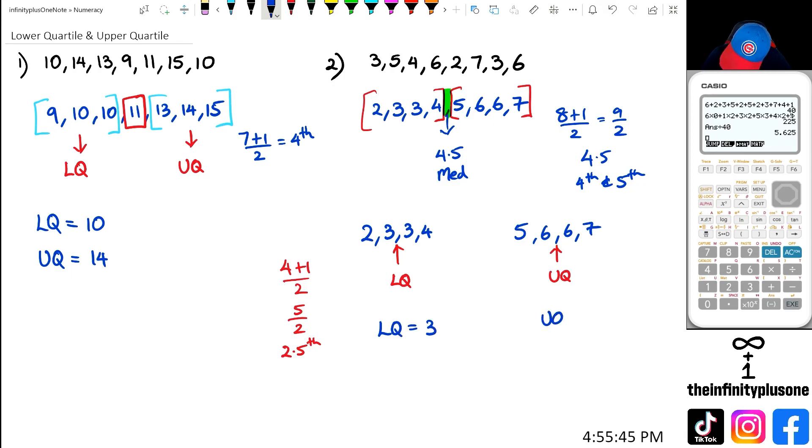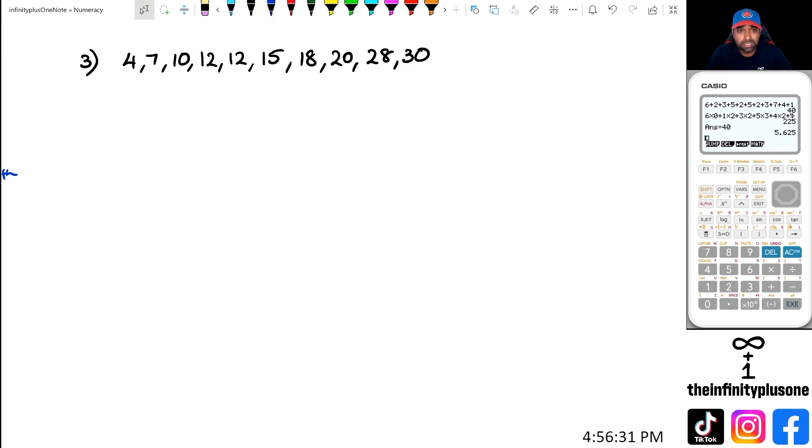Let's do one more example. For this particular example, I've actually already ordered it. So if we look at it, we've got 10 numbers. So if we want to find the median, we're going to do 10 plus 1 divided by 2, which equals 5.5, so it's between the fifth and sixth number.